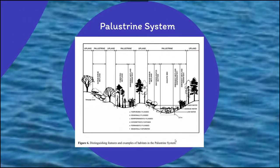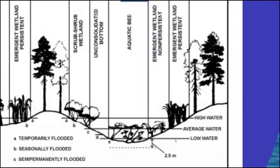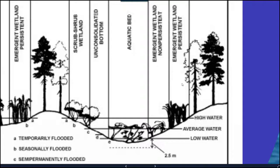For the palustrine system, there's a bit more variability. There are much lower levels of water, but that can fluctuate as well. It's broken into sections such as the aquatic bed, the emerging wetland, and the persistent wetland. You'll have moss and other structures found within these marshy regions.